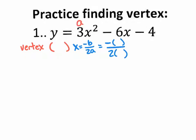The a value is 3, the b value is negative 6, and the c value is negative 4, which we don't even use in the formula. Let's plug in negative 6 into the b spot and plug 3 into the a spot, and let's do the math carefully. The minus minus 6 becomes plus plus, so that is positive 6 over positive 6. So x equals 1.